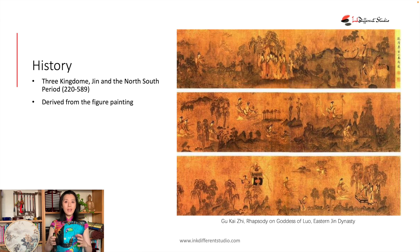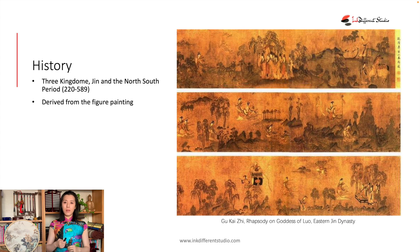Oriental landscape painting was probably one of the very earliest painting styles in the world. The remaining paintings we can see today go back over 2,000 years. Gu Kaizhi, one of the most famous Chinese painters of the Jin dynasty, has two artworks that still remain in the world, as you can see on the screen right now.